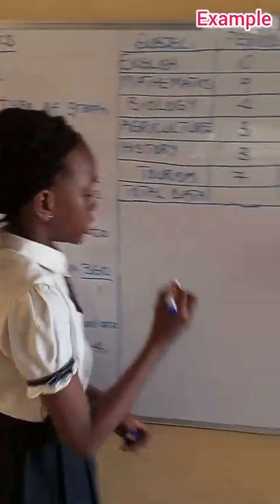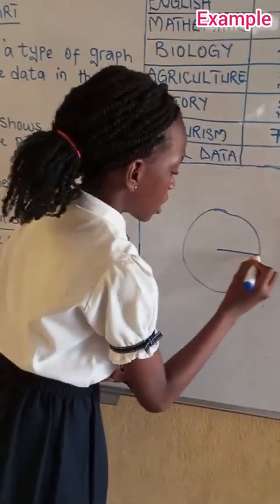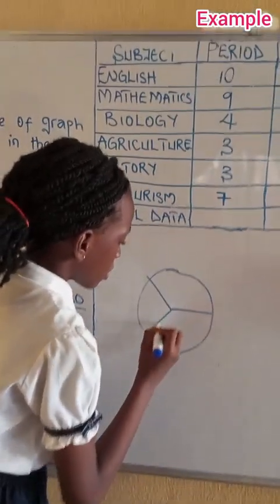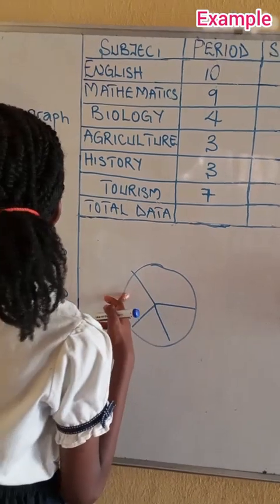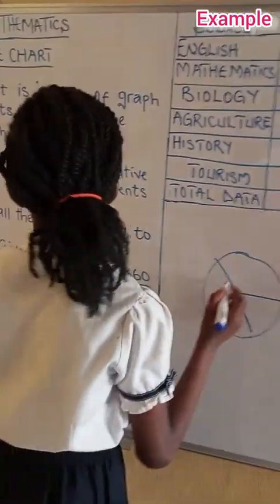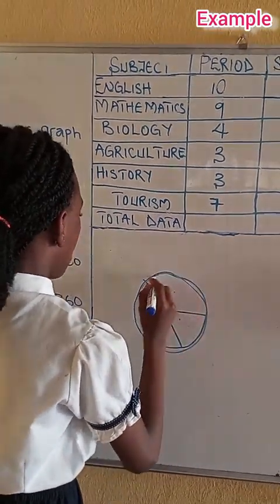The slices of pie show the relative size of data while pie represents the whole. The circle has a point at the center which has slices or sectors which shows the relative size of data while the pie represents the whole.